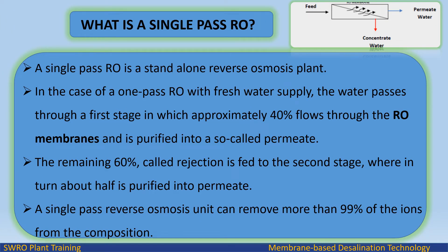A single pass RO is a stand-alone reverse osmosis plant. In the case of a 1 pass RO with fresh water supply, the water passes through a first stage in which approximately 40% flows through the RO membranes and is purified into a so-called permeate. The remaining 60%, called rejection, is fed to the second stage, where in turn about half is purified into permeate. A single pass reverse osmosis unit can remove more than 99% of the ions from the composition.